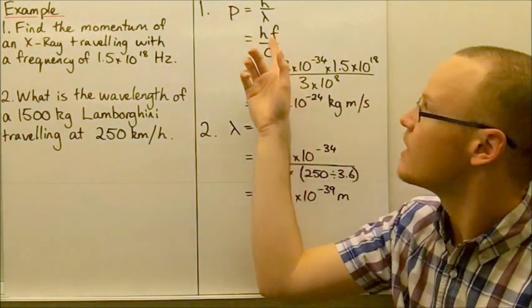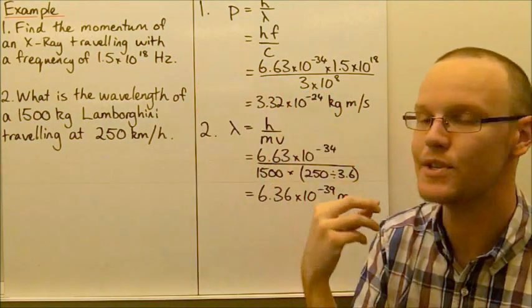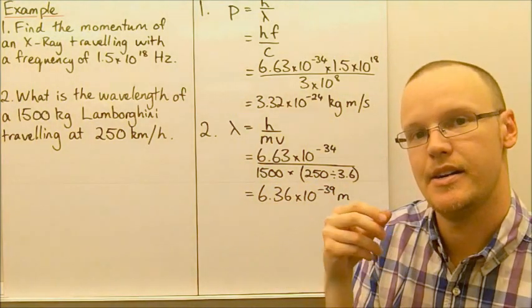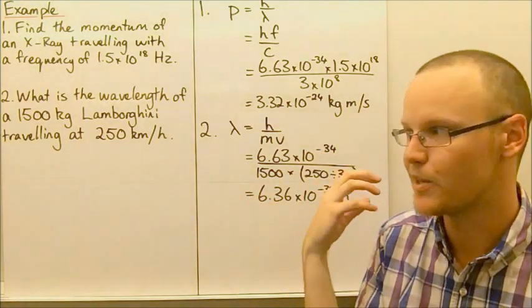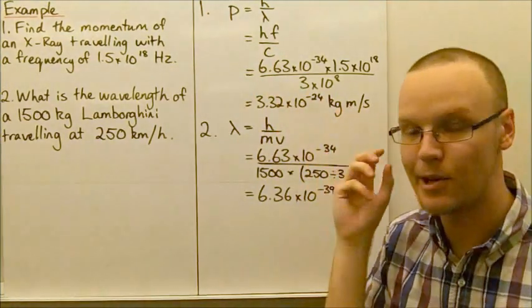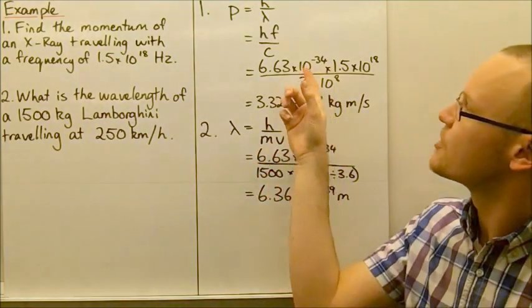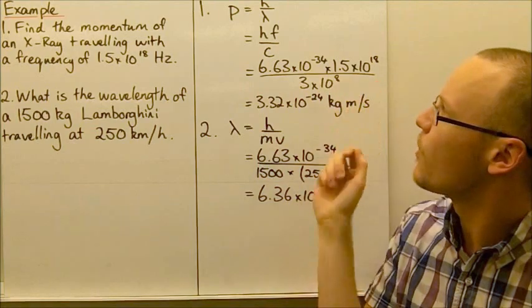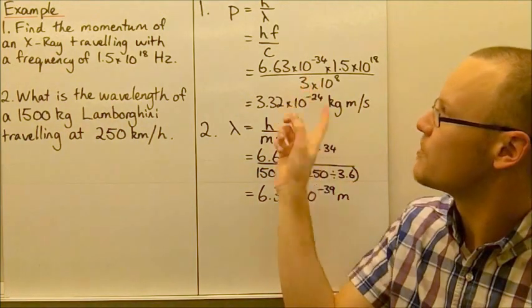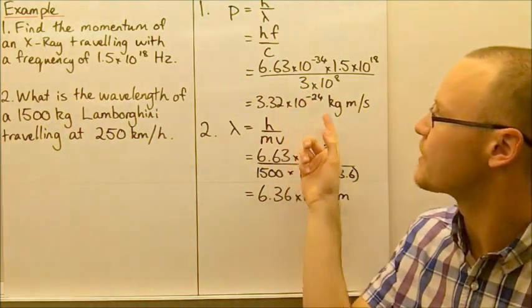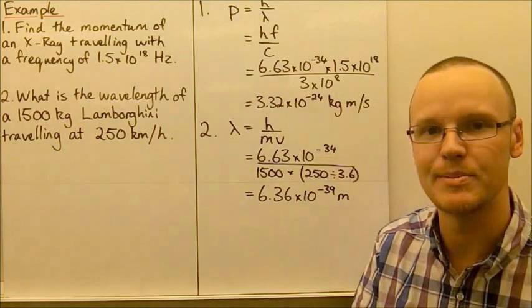Plugging in these values, notice I've used the joule-seconds value for Planck's constant. That's because we're going to be looking at SI units for momentum, kilogram meters per second. We're not looking at anything involving electron volts here. Planck's constant multiplied by 1.5×10¹⁸, the frequency of our radiation, divided by c, the speed of light. We can see that the momentum it has is very low, 3.32×10⁻²⁴ kilogram meters per second.